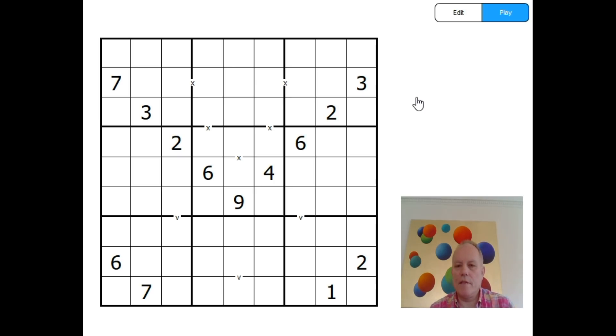Now, it's very important with XV Sudoku that if any two cells next to each other add up to 10 or 5, you get one of these markings. That means that every other pair of cells next to each other doesn't add up to 10 or 5, and that's a really important kind of negative constraint to be aware of here.